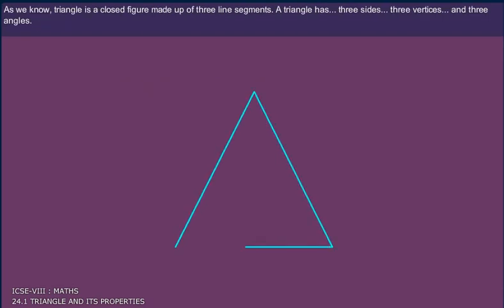As we know, triangle is a closed figure made of three line segments. A triangle has three sides, three vertices, and three angles.